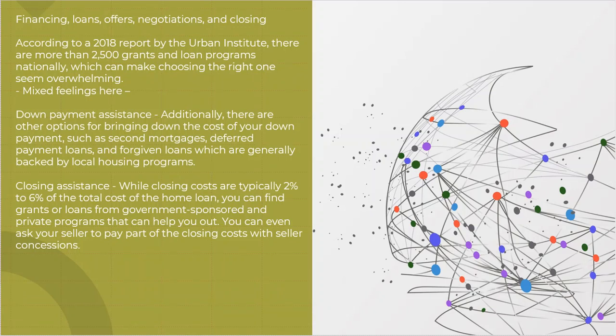According to a 2018 report by the Urban Institute, there are more than 2,500 grants and loan programs nationwide designed and geared towards first-time homebuyers. Now, there's mixed feelings there. The upside would be 2,500 seems to be a lot. The downside is because there are so many, we're pulling in this whole confusion, analysis paralysis, where do I start, all of this.